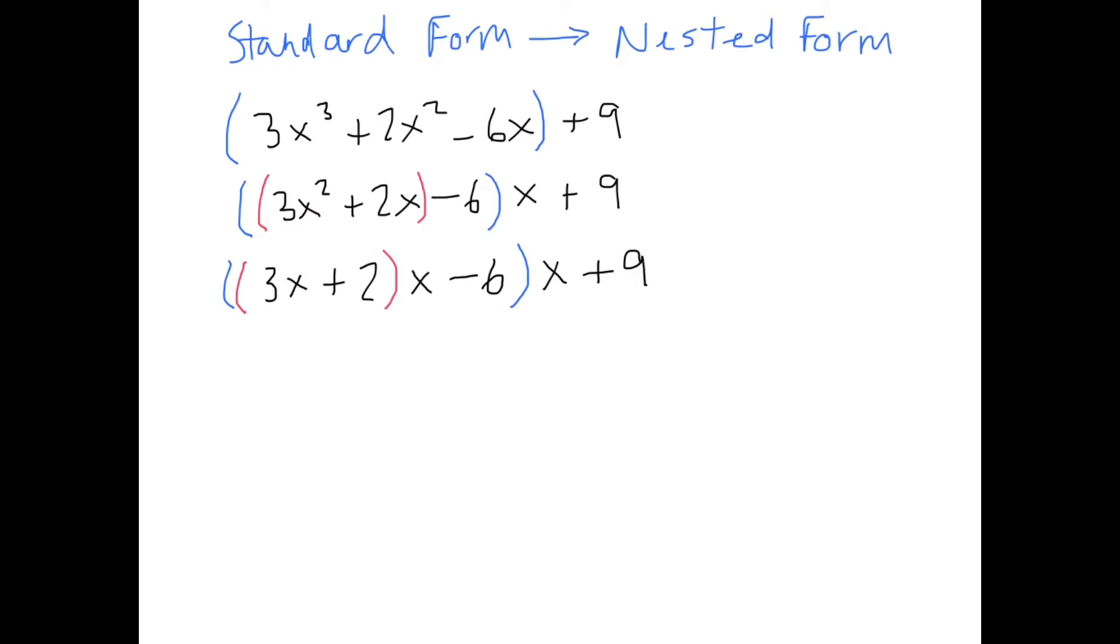Now, if we look at our remaining terms, 3x plus 2, there's nothing further that we can factor out of that. So our final answer, or our final factored equation in nested form, is simply 3x plus 2 times x minus 6 times x plus 9.